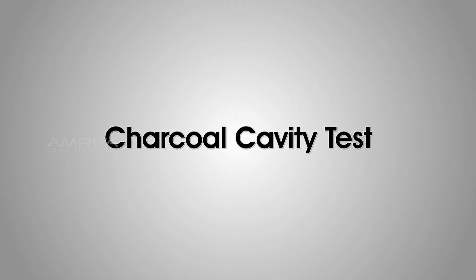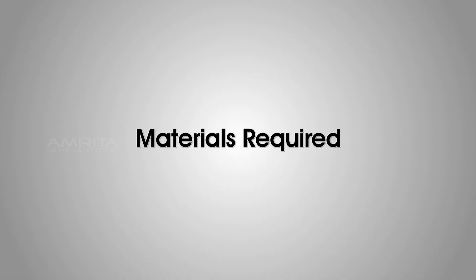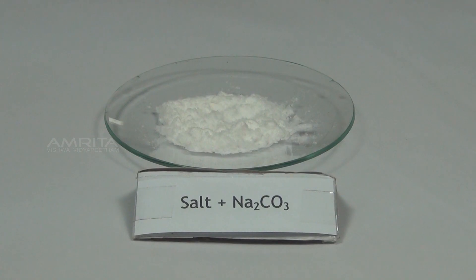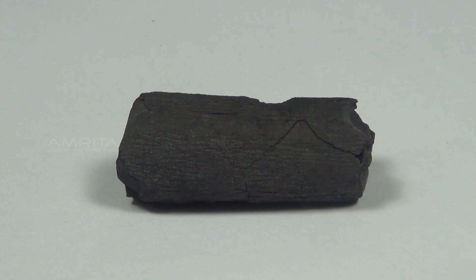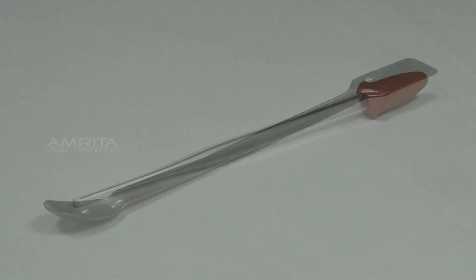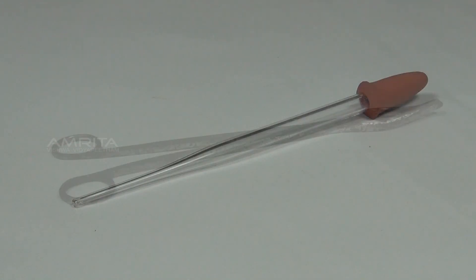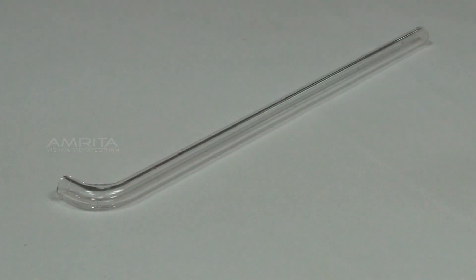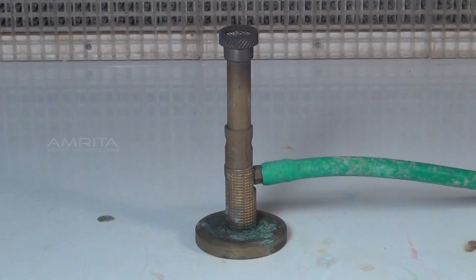Charcoal Cavity Test: Materials required are a mixture of salt and sodium carbonate in a watch glass, charcoal piece, distilled water, spatula, dropper, tongs, blow pipe and Bunsen burner.